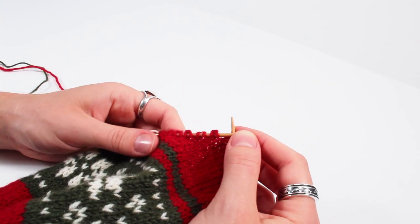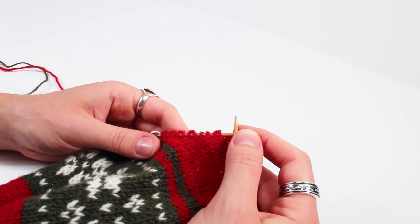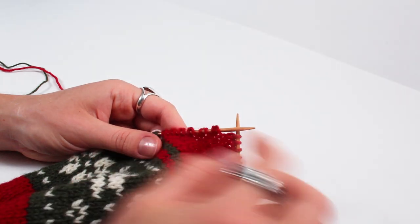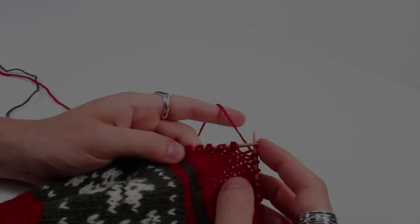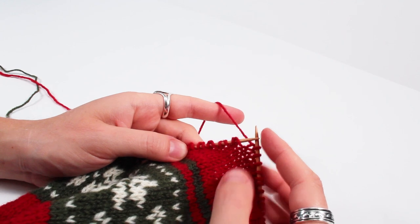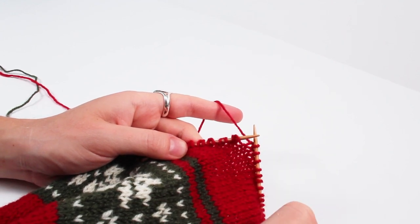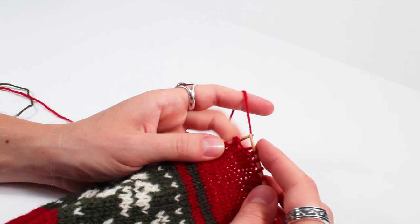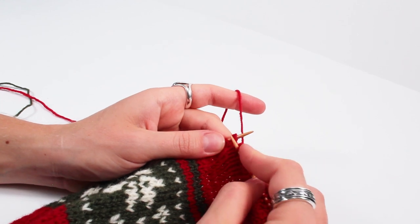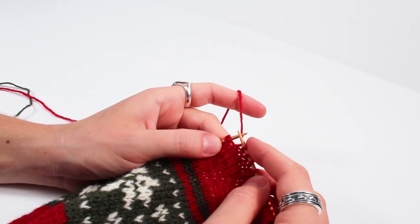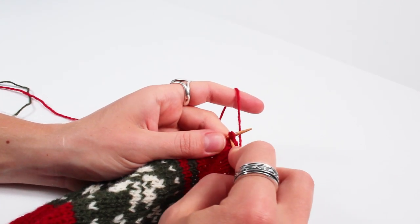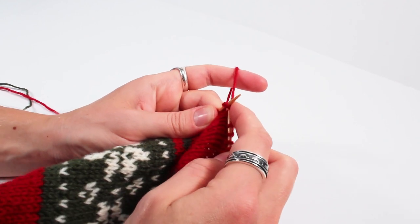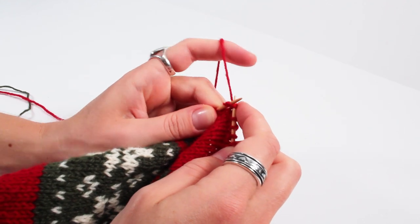So now we need to work back across picking up one additional stitch each row. So to do that we'll work into these double stitches, treating them as one, sort of like a knit two together. So go in through both legs of this double stitch and just knit it together.